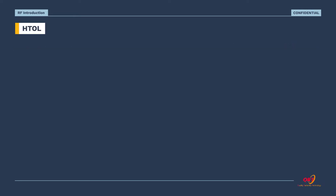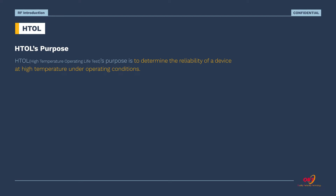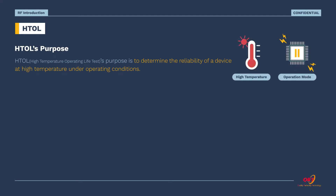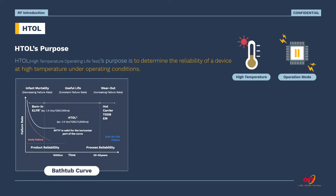Now let's get into reliability testing. HTOL, which stands for High Temperature Operating Life Test, determines the reliability of a device at high temperature under operating conditions. By operating the HTOL, we can draw an estimated lifespan for the device, widely known as the bathtub curve.